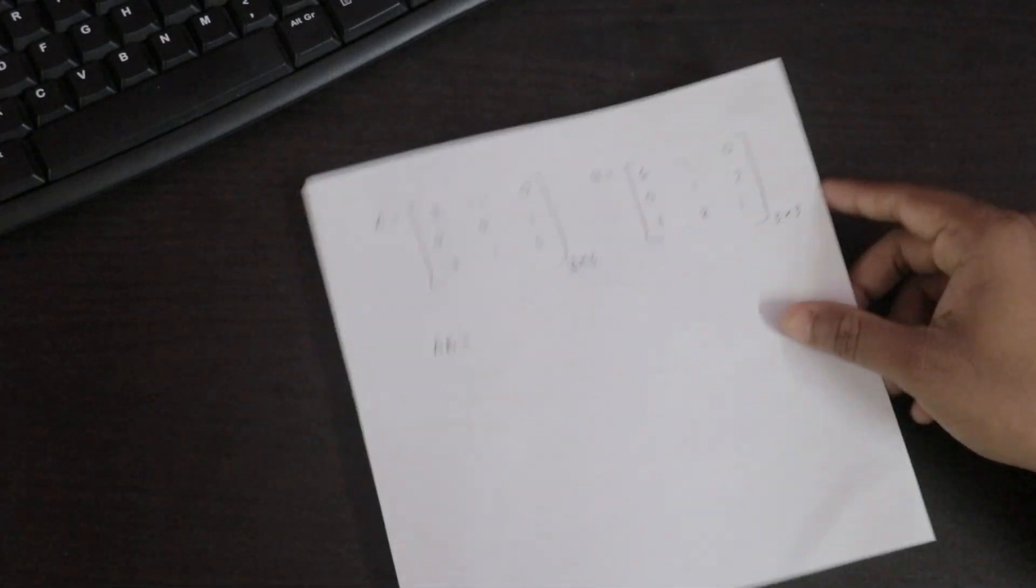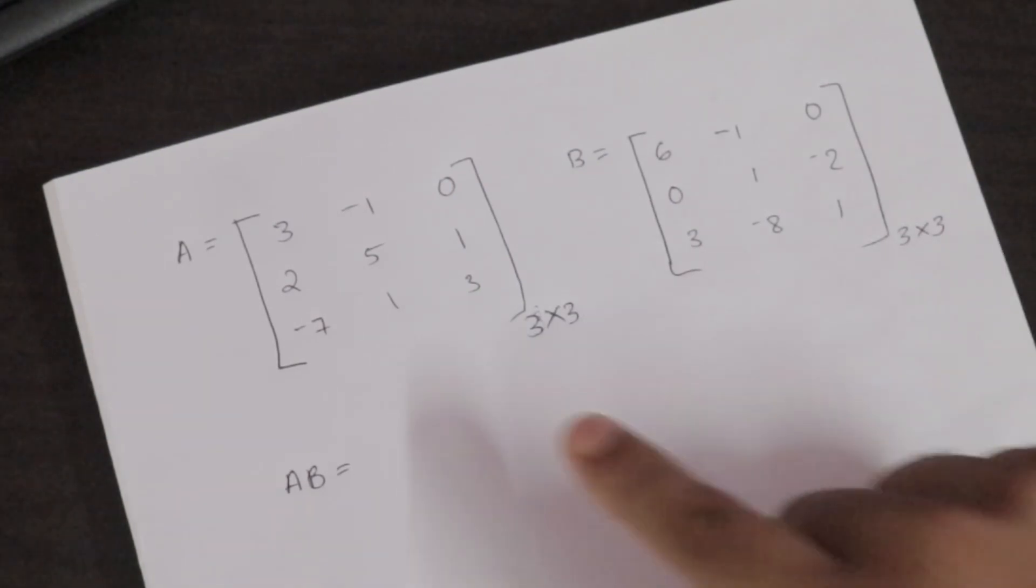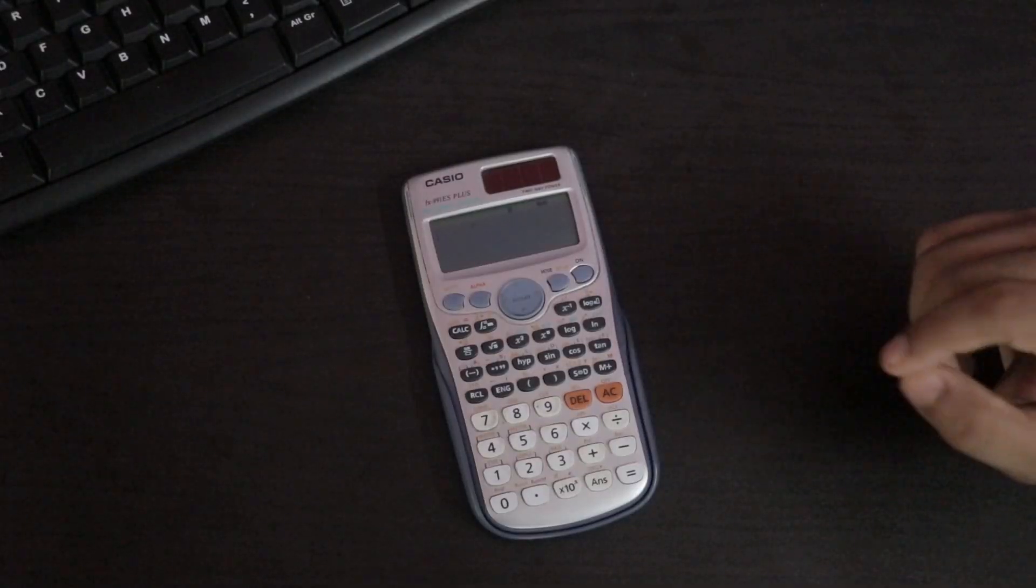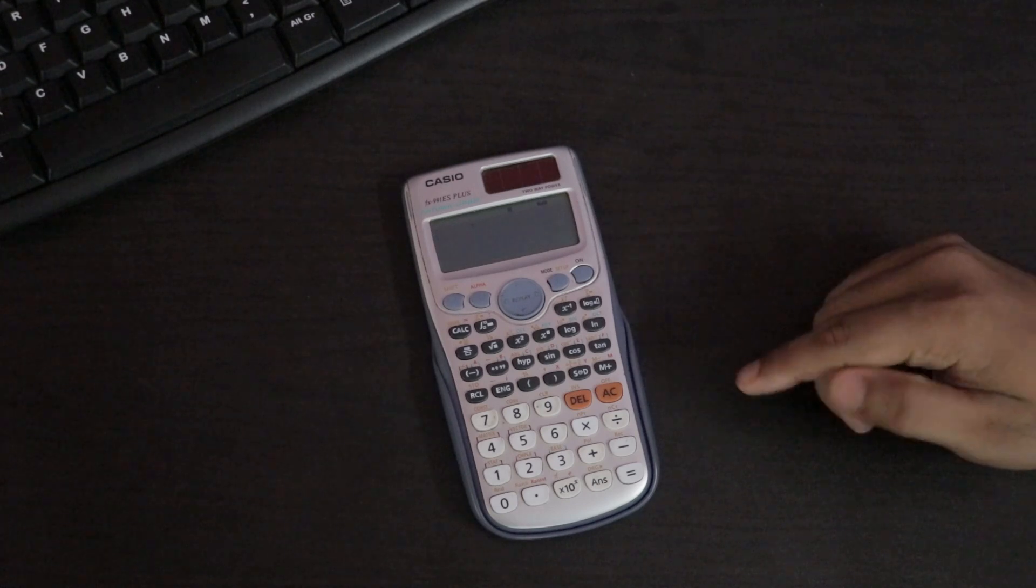These are the matrices which I am going to multiply. Here the matrix A with 3 by 3, matrix B with 3 by 3. As we all know how to do the matrix in mathematical form, here I am going to show you how to do matrix multiplication using calculator.